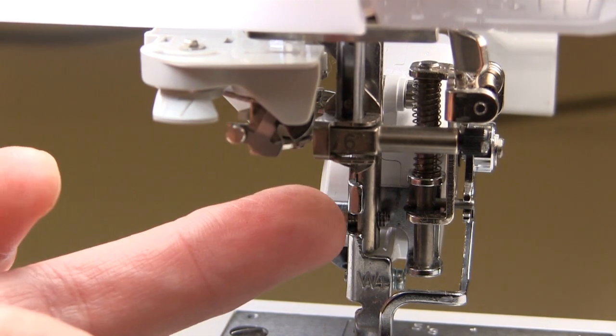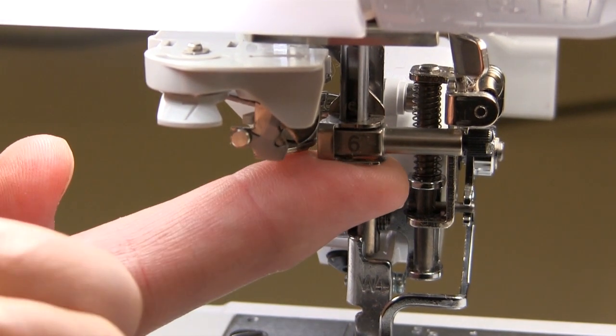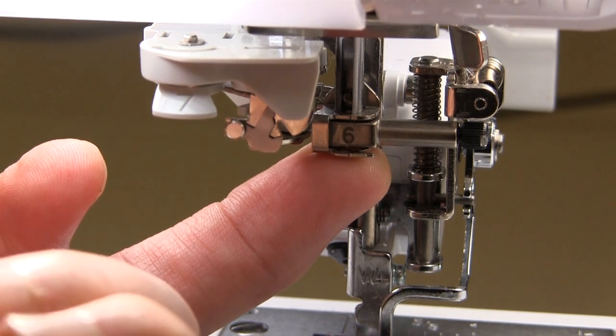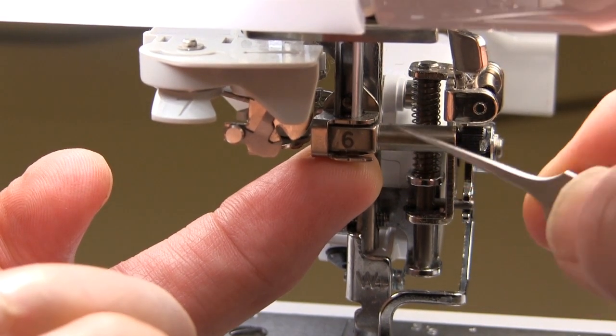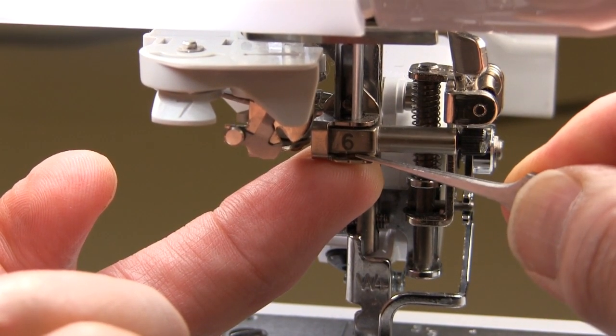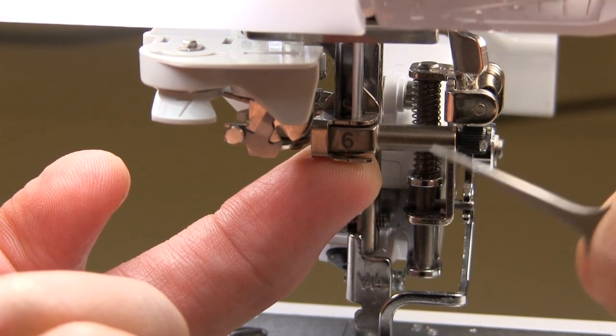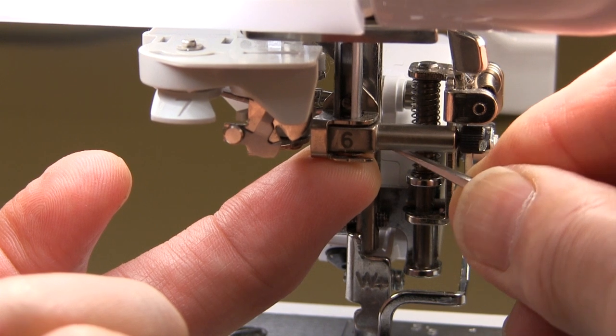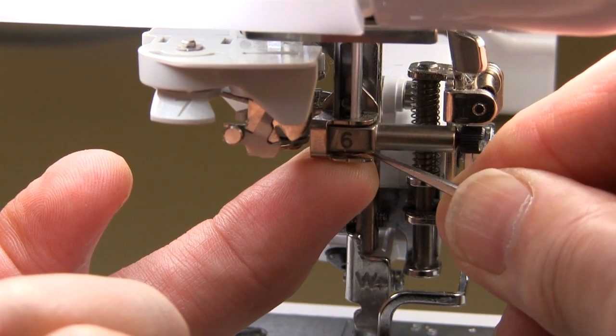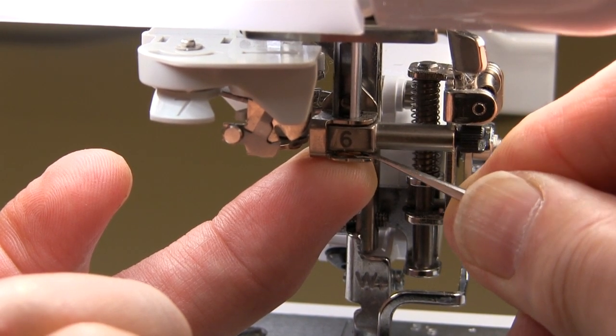What you need to do in that instance is get your finger underneath there and push the spring back to where it should be above this plate here and push it from the back also. Get a screwdriver or something where you can actually bend it back so that it stays in position just there.